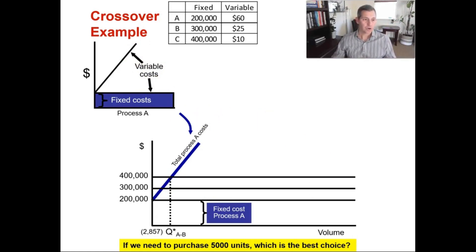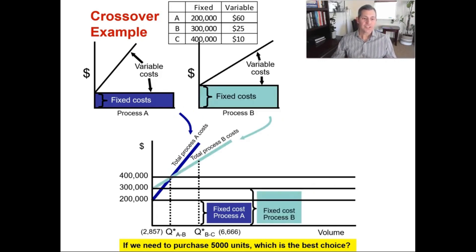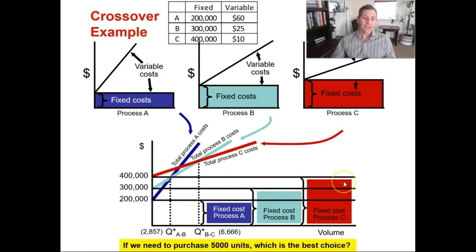Next, you've got your fixed cost for B. It's $100,000 more, but your variable costs are lower. Your variable costs are lower for B, your fixed costs are higher, and you can see those cross over - that's why it's called crossover point analysis - they cross over at 2,857 units. For fixed cost of C, it has a higher cost upfront at $400,000, and it crosses over process B at 6,666 units.